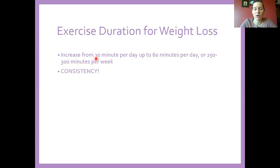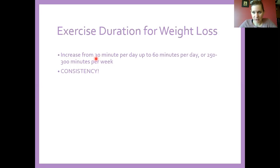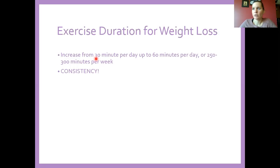Remember the 10% progression rule: if I can do 20 minutes now, I want to progress no faster than 10% more each week. So if I can do 20 minutes now, I add two extra minutes for next week — that puts me at 22 minutes. The following week I increase from 22 minutes to about 24 and a half minutes. The idea is you progress volume per workout by 10% each week.